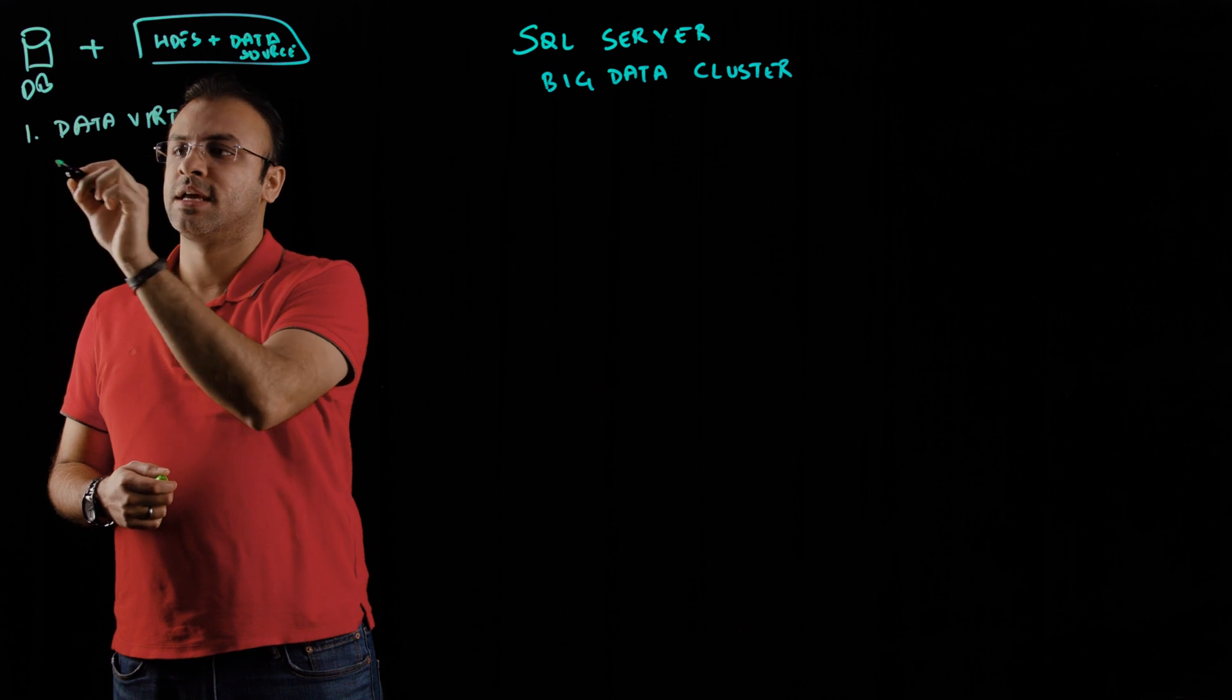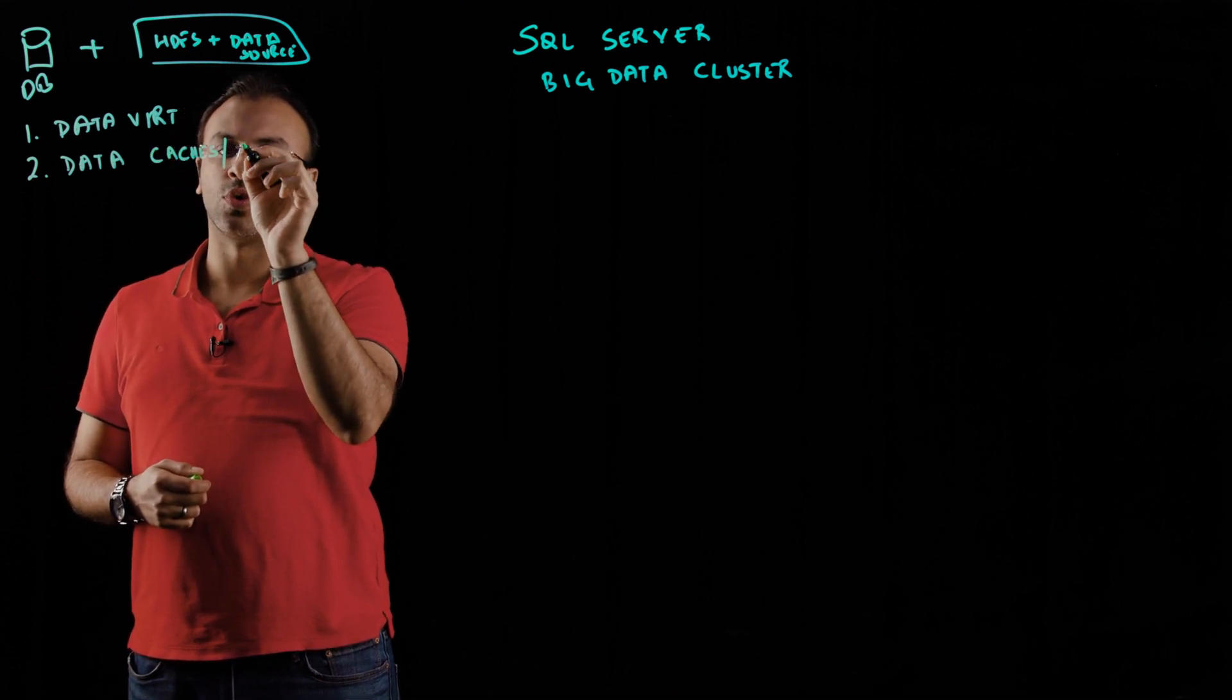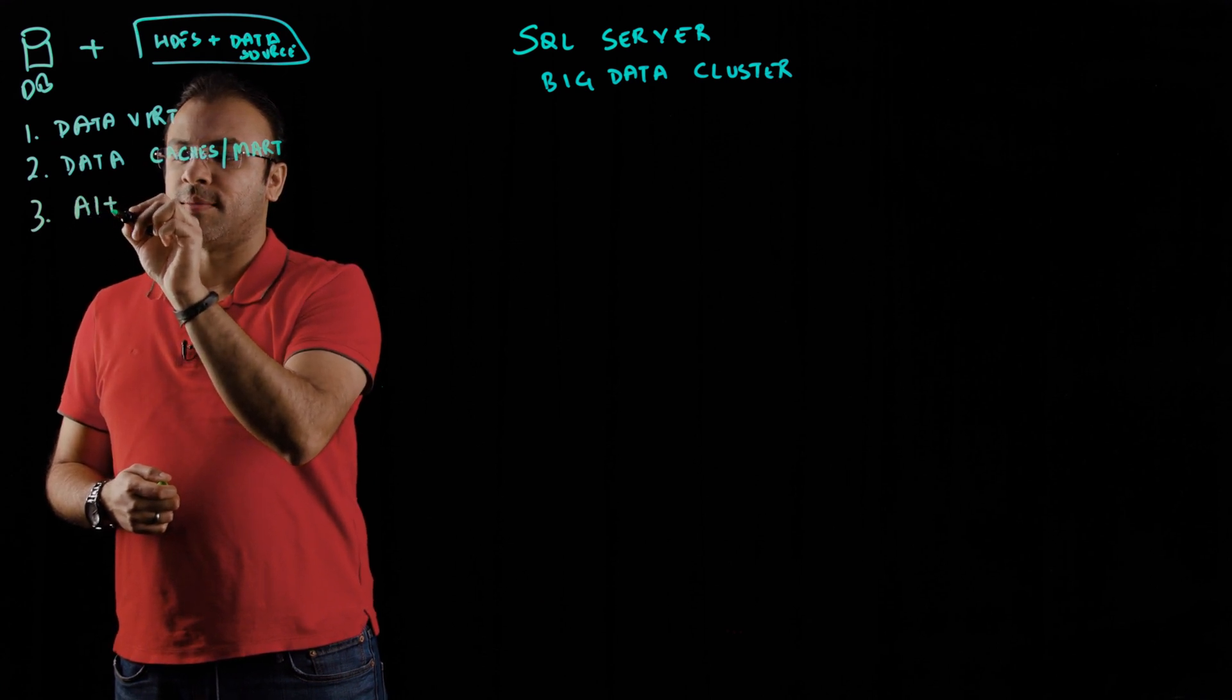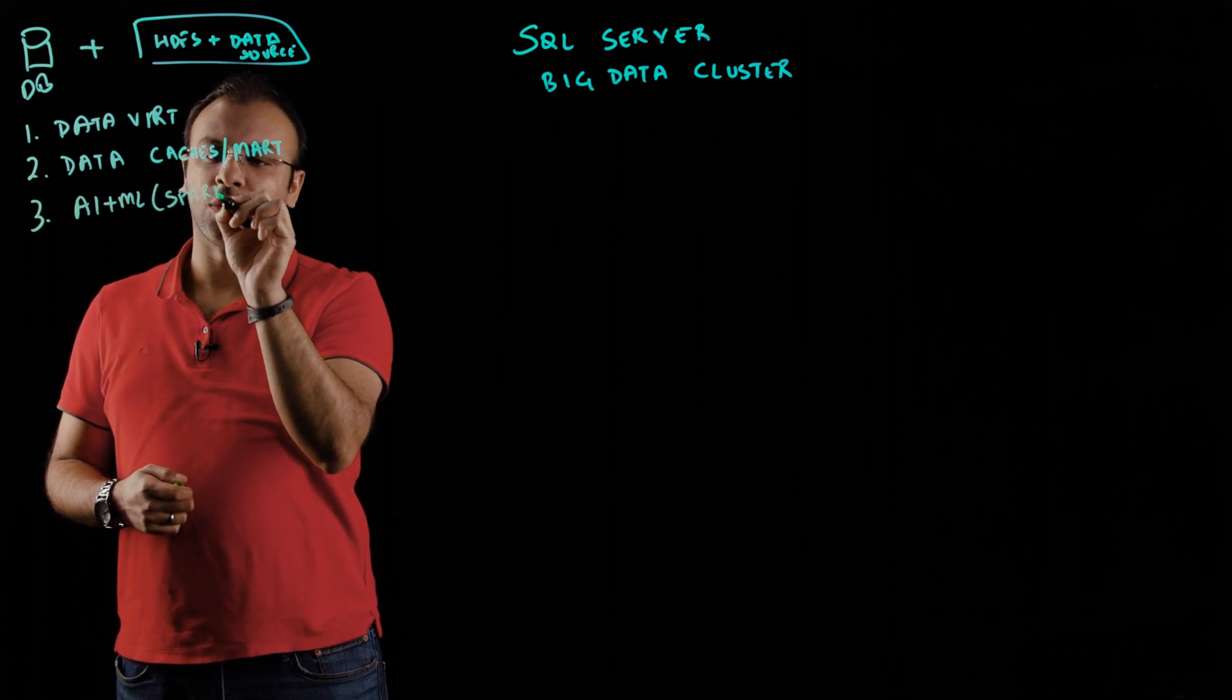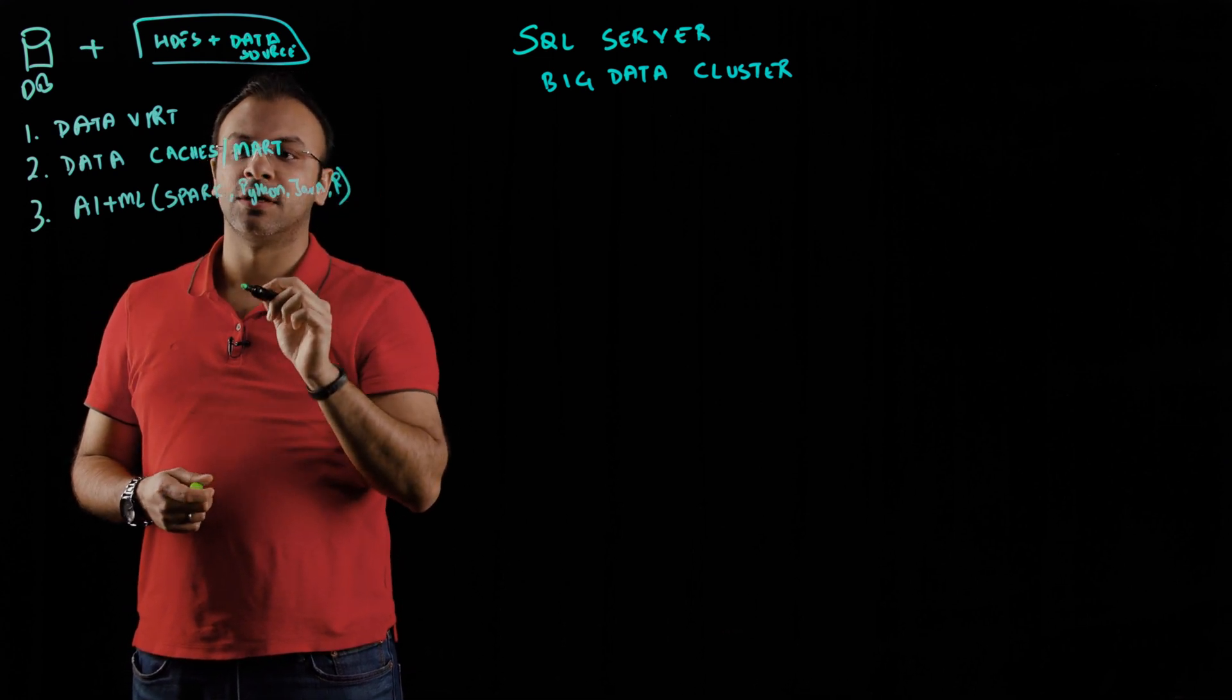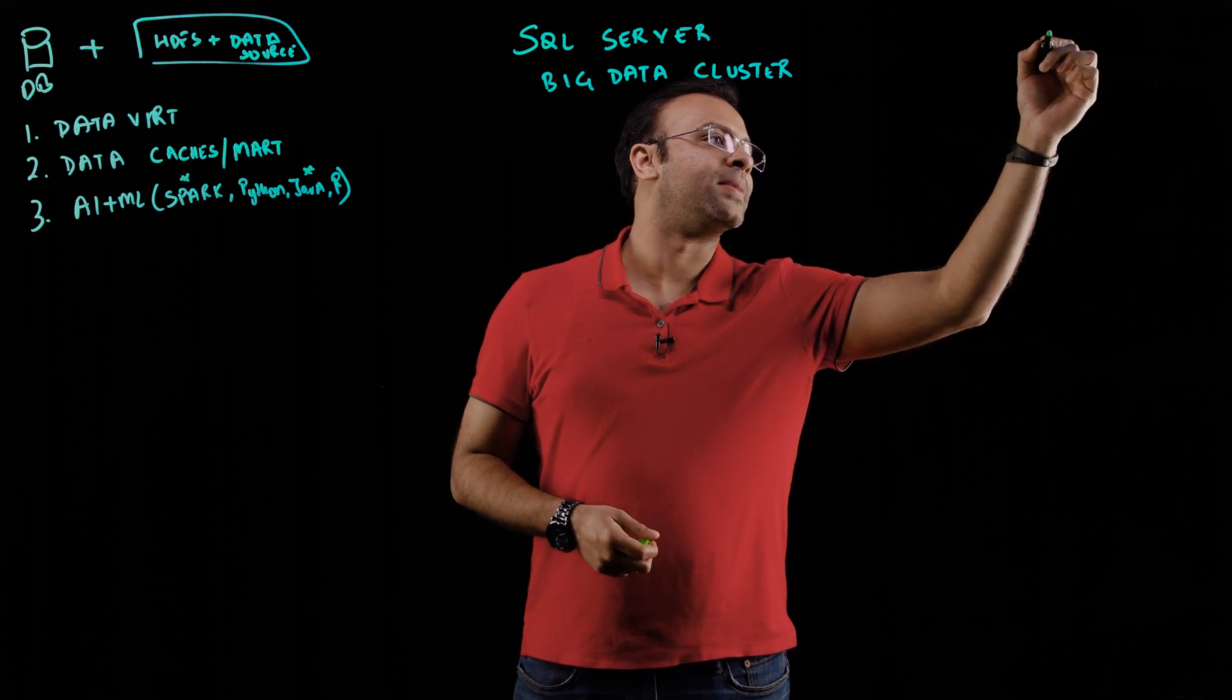There are a few scenarios we enable with SQL Server Big Data Cluster in 2019. The first is data virtualization. The second is where data needs to be cached inside SQL Server - you can create caches in your storage and data pools and create data marks on top of them. The last is you can run AI and ML experiments on top of it using things like Spark, Python, Java, or R. These are capabilities we had in SQL Server 2017 and below. Java and Spark are new.